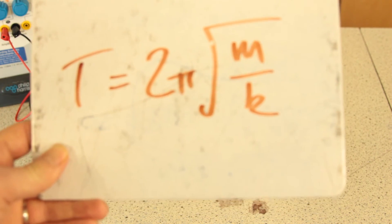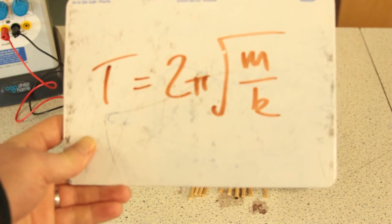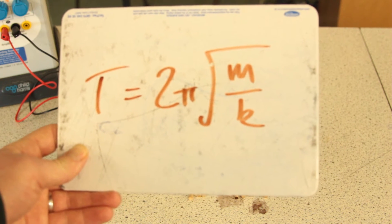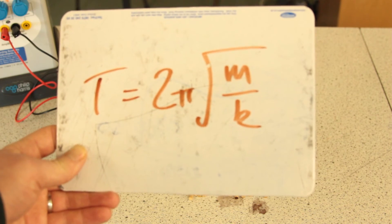And also, it will say that lower spring constant, higher time period. So less stiff, higher, lower frequency.